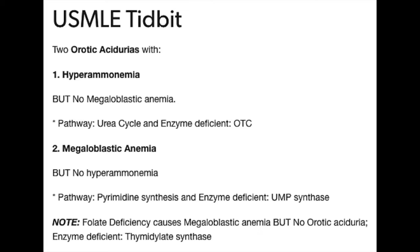There is one disease you need to be familiar with that results from a defect in nucleotide synthesis, and that's orotic aciduria. Orotic aciduria is caused by the inability to convert orotic acid to UMP — that's in the de novo pyrimidine synthesis pathway.